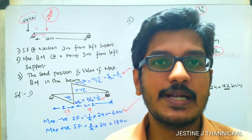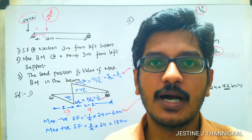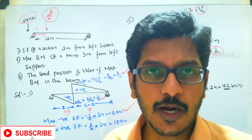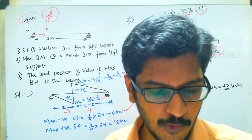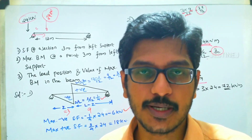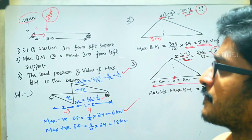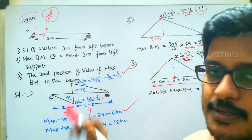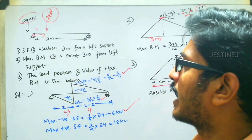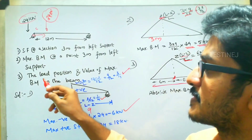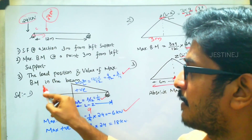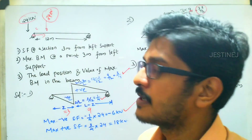Welcome to a new video lecture. Today we will discuss a problem related with the influence line diagram. A single point load of 24 kilo Newton is moving from left to right on a simply supported beam of span 12 meter. Calculate: first, the shear force at a section 3 meter from the left support; second, the maximum bending moment at a point 3 meter from the left support; and third, the load position and value of the maximum bending moment in the beam.